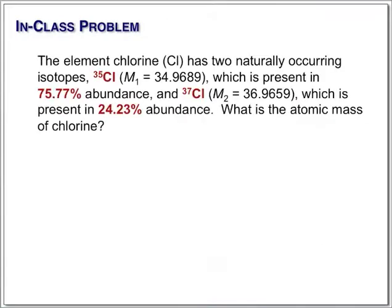Let's do it again for chlorine. Chlorine consists of two isotopes, chlorine-35 and chlorine-37.